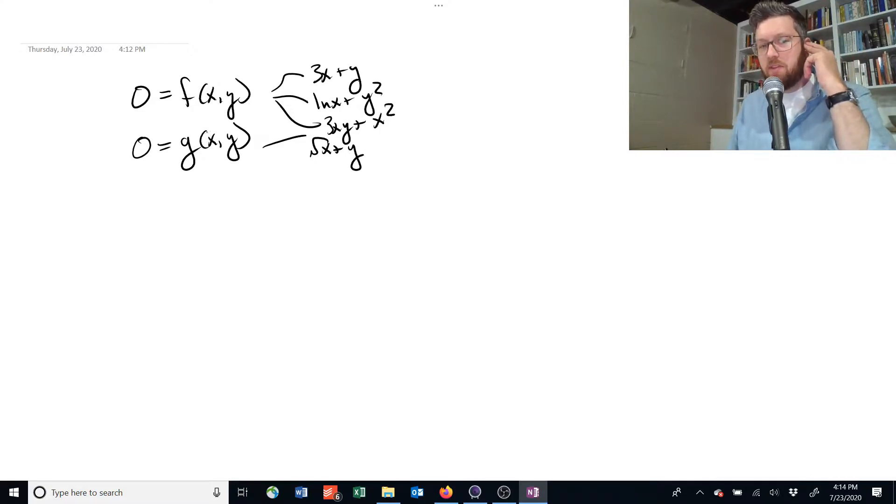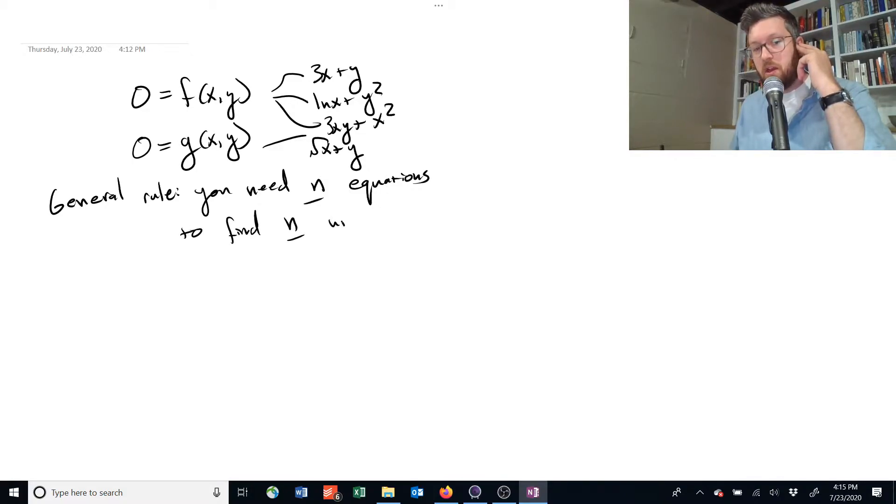So you have two equations and you have two unknown variables. The general rule is going to be that you need n equations that are different to find n unknown variables.